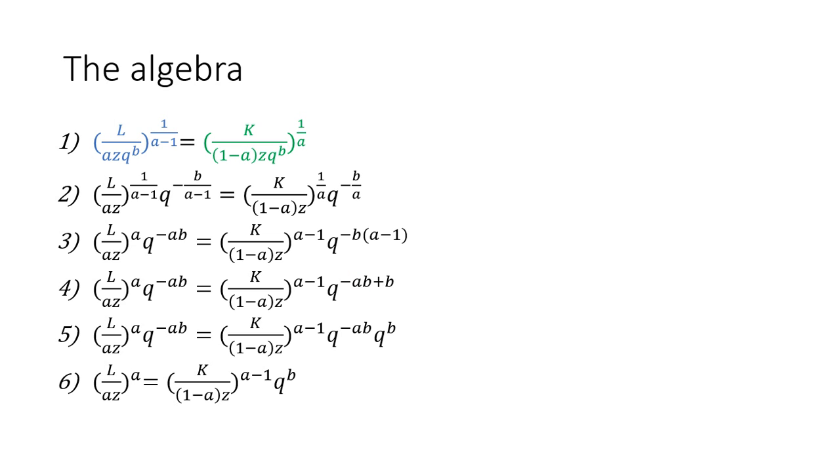In step 6, I'm going to eliminate both of these Q to the minus AB terms since they're on both sides. I'm just going to divide through and eliminate those. That's how I arrived at step 6.